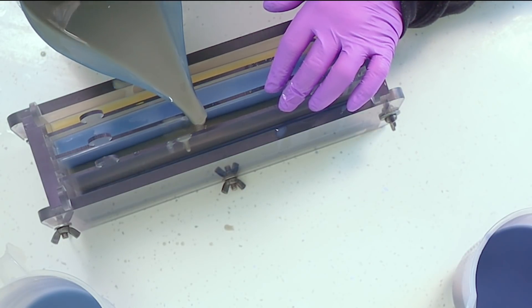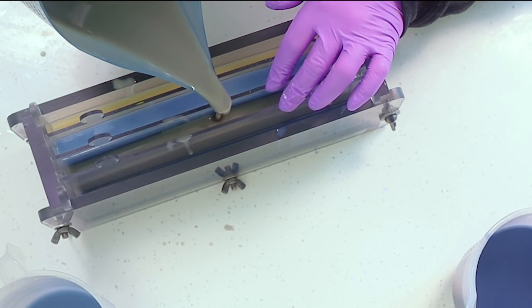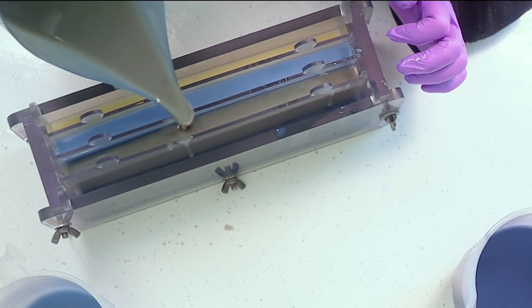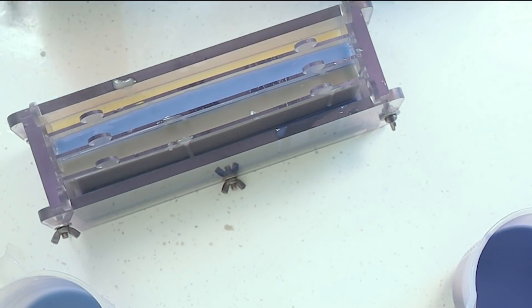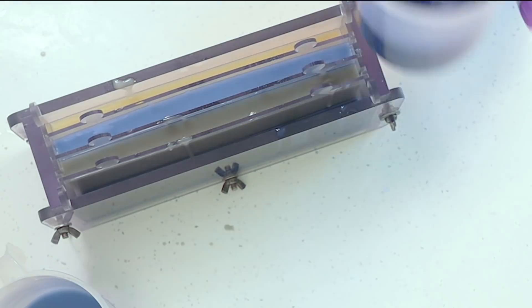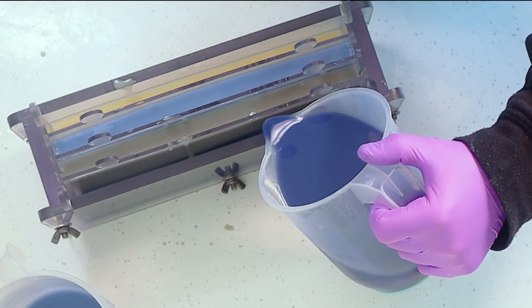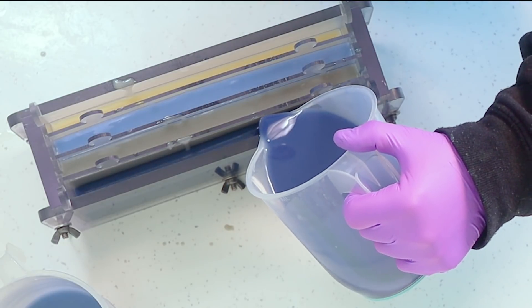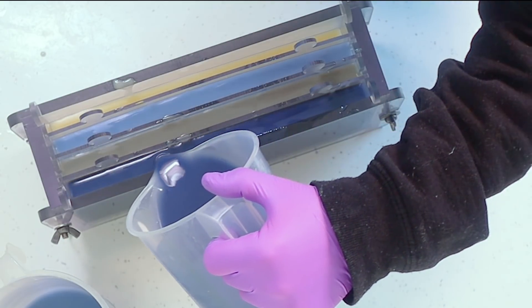What that does is it stops the soap from creeping underneath the dividers because if you just fill up one divider fully it can flood underneath. By putting a little bit of soap in each one that forms little extra walls and stops any spread of the soap. Once you've got a little bit in you can then fill up the rest of those slots between your dividers.